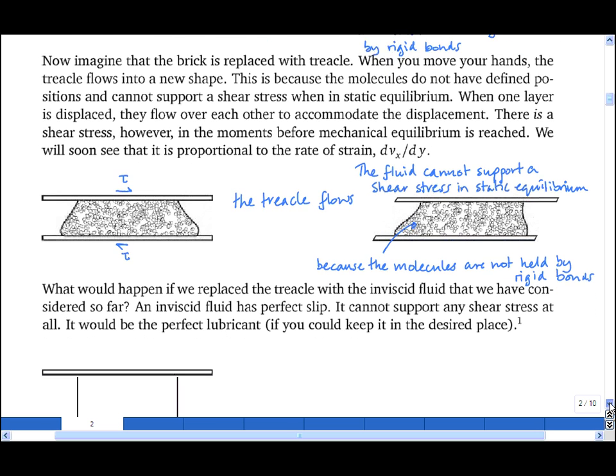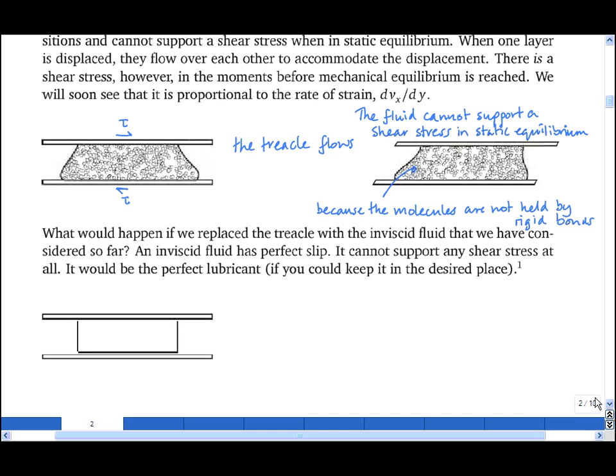Now as a little thought experiment, let's imagine replacing the treacle with an inviscid fluid. When I try to apply a shear stress to the top and bottom, the inviscid fluid cannot apply any shear stress back, and you would get perfect slip. Now this may seem fanciful, but look up helium at very low temperatures. One of its isotopes, helium-4, does behave like this.